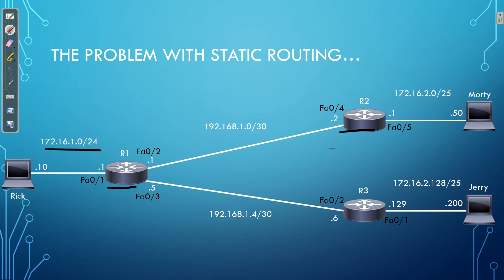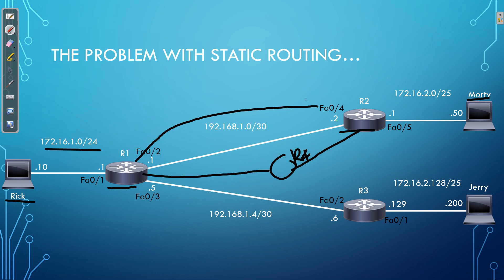Essentially, you will be spending all of your time configuring static routes. The second issue is that static routes don't react dynamically to changes in the network topology. As an example, imagine I introduced an alternative connection between R1 and R2 going through R4. The static route configured on R1, so that Rick can send his all-important email to Morty, tells R1 to forward traffic over the direct link towards R2, since that's only one hop and therefore the quickest route.